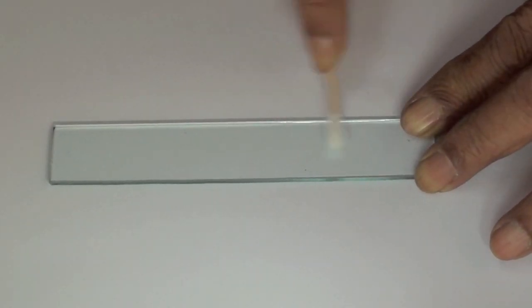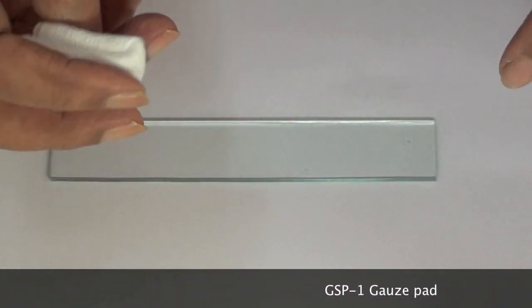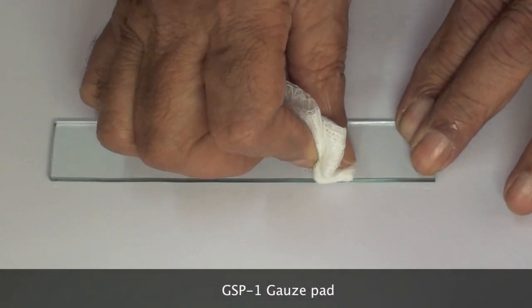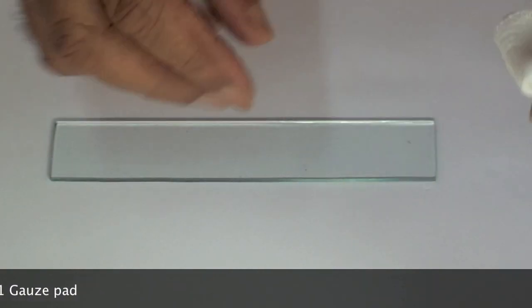Then a folded gauze pad is used to wipe away the liquid from the surface, one wipe in each direction starting from the middle. Wiping the surface in a back and forth movement will spread the dirt but not remove it, so wiping back and forth should be avoided.